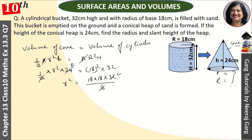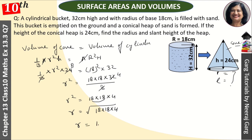8 cancels to give 4, so r² = 18 × 18 × 4. Taking the square root, r = 18 × 2, which equals 36 centimeters. That is our radius.